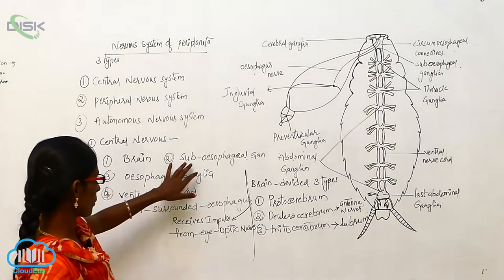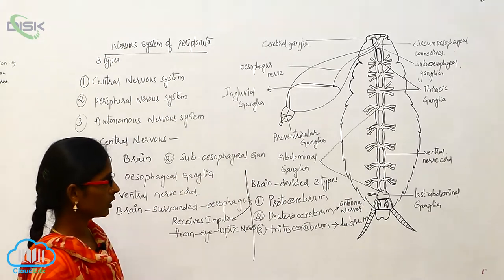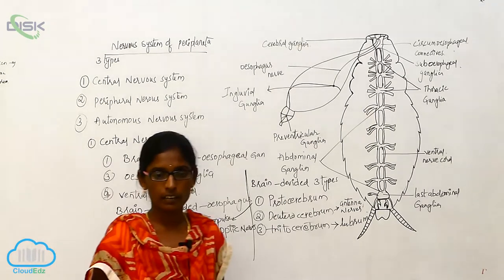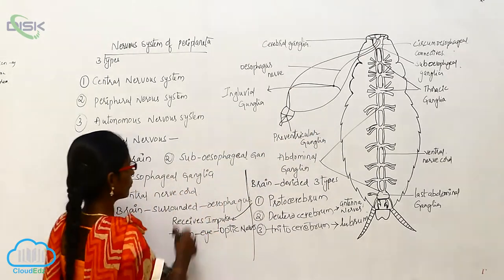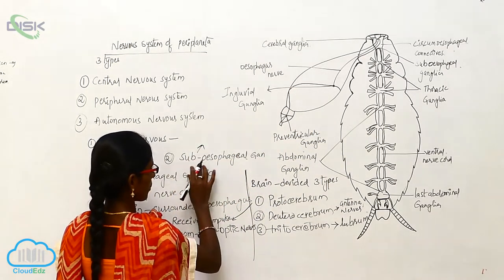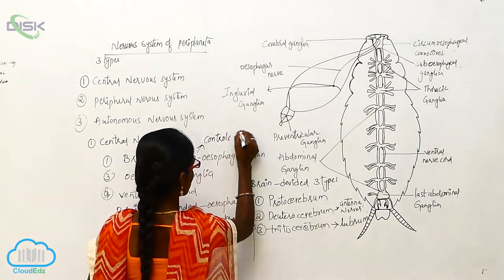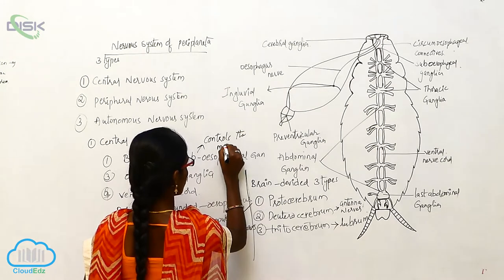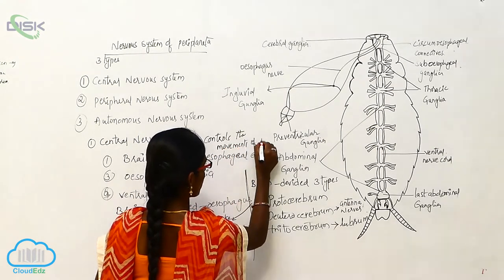The subesophagal ganglia arises from the central nerve cord and controls the movements of legs.